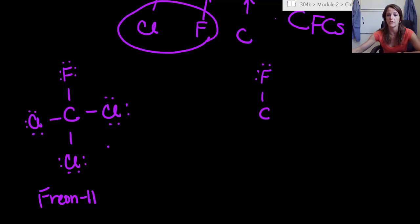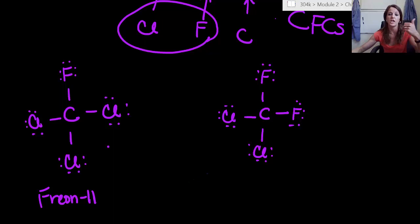Now, we also want you to know Freon 12. So Freon 12 has one carbon, but it has two fluorines and two chlorines. Does it matter how you draw this out? Can the fluorines be next to each other? Can they be across from each other? Yes, it 100% matters.